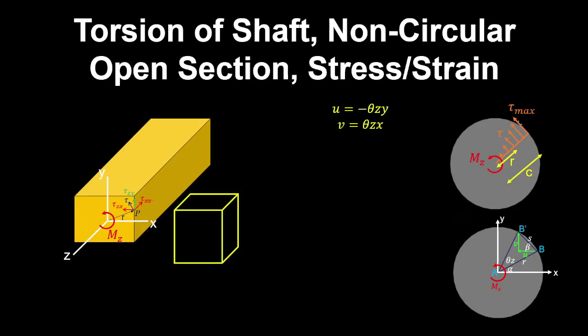We previously derived the torsion equation for a circular shaft, where we found that the shear stress is tangent to the boundary, which should be a stress-free surface. So if we translate this solution to a non-circular shaft subjected to torsion, the stress vector being perpendicular to the radial vector — as with the circular section — violates the condition of a stress-free surface. When we resolve the stress into horizontal and vertical components, we get a complementary shear stress acting on a free surface.